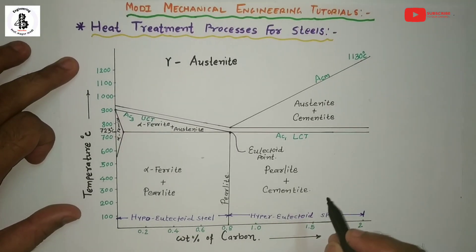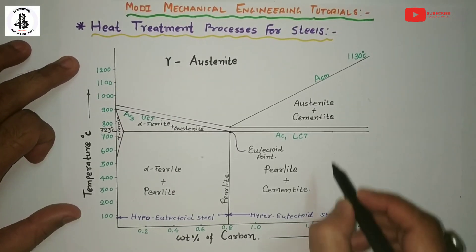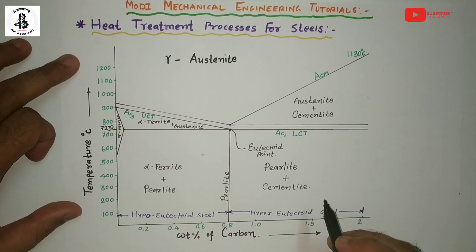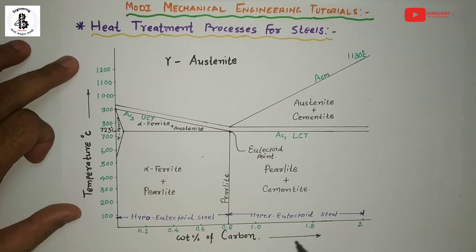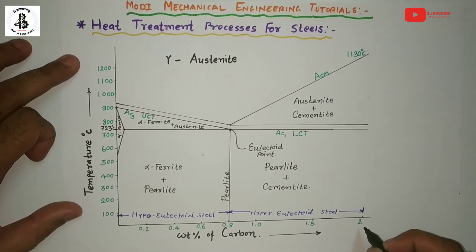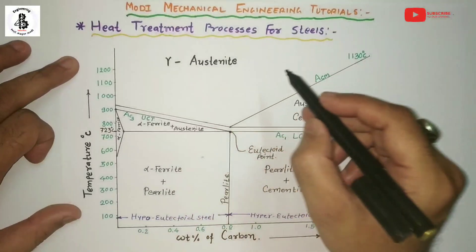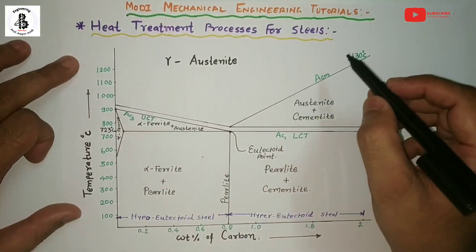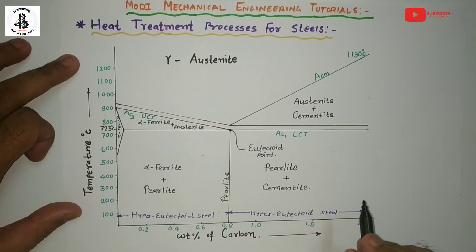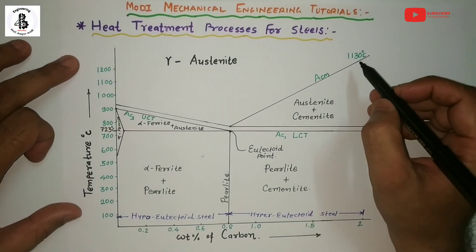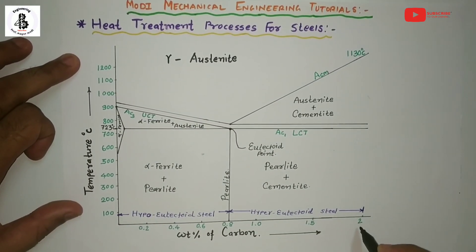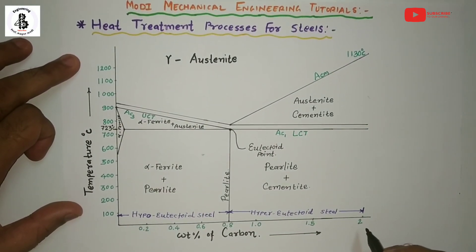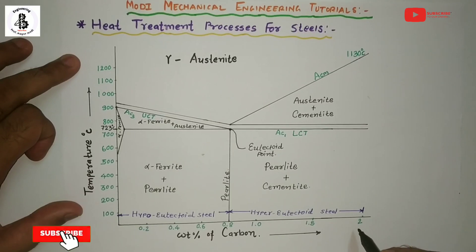Before starting the heat treatment process, there will be the general layout of the heat treatment process chart. Basically that will be related to the iron-carbon diagram for up to 2% carbon being present in steels, because heat treatment processes are applicable to steels. We are only considering up to a temperature range of 1130°C in the iron-carbon diagram, and the weight percentage of carbon up to 2%, because steel is nothing but up to 2% carbon present with iron.